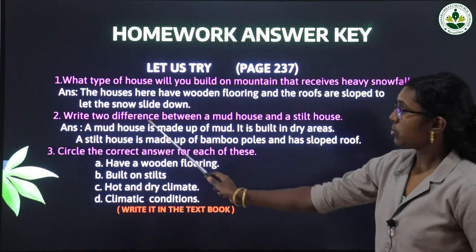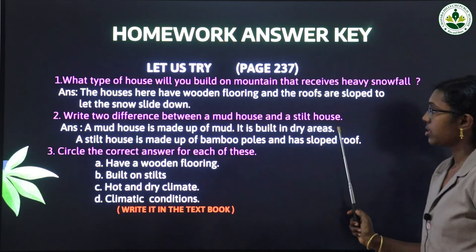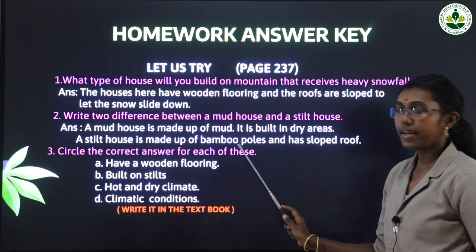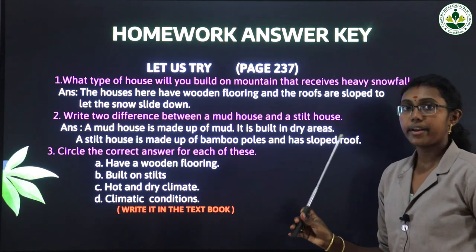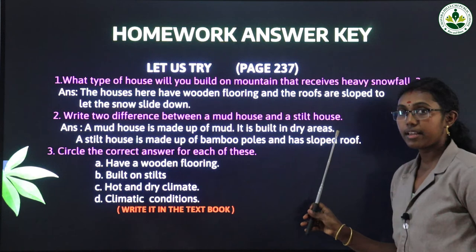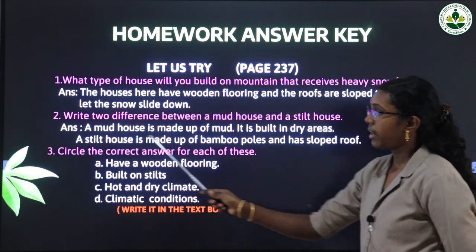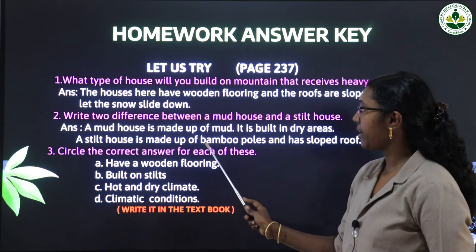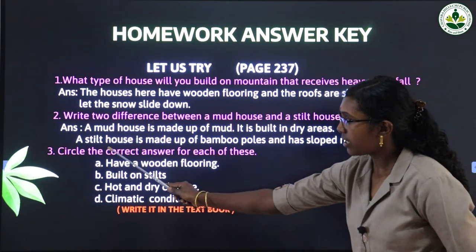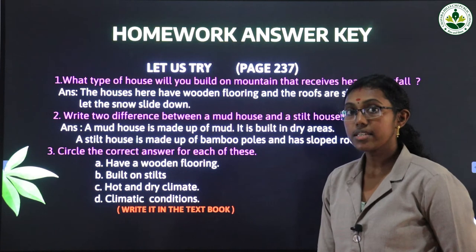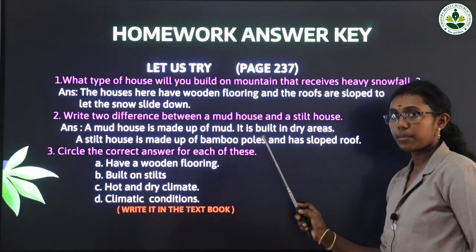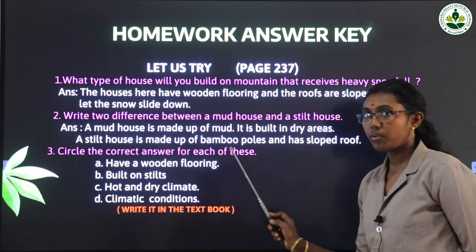Two differences between a mud house and a stilt house: a mud house is made up of mud and is built in dry, hot areas. A stilt house is made up of bamboo poles and has a sloped roof. Stilt houses are found in Assam, built on top of bamboo poles with sloped roofs.